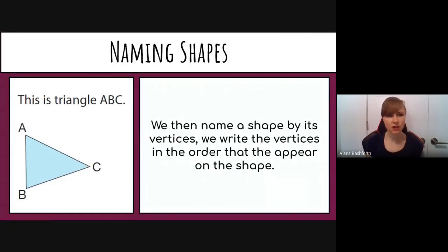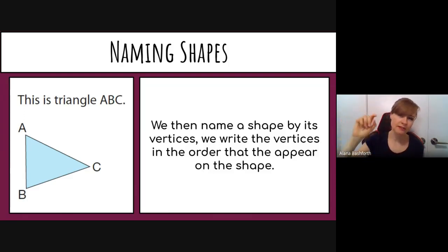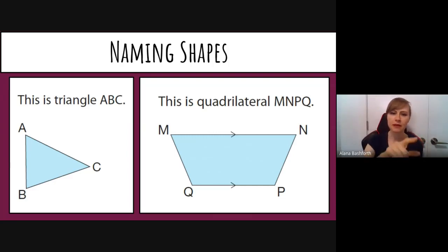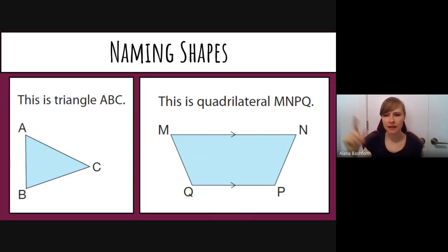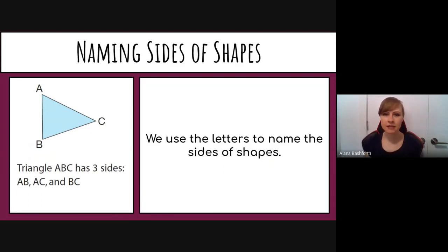You just pick any vertex to start, trace your finger to the next connected vertex, record that letter, and continue until all letters are recorded. For a quadrilateral — a four-sided shape — with vertices M, N, P, Q, you would trace M to N to P to Q, giving you quadrilateral MNPQ. You could not say quadrilateral MNPQ skipping a vertex, because M and P are not directly connected.